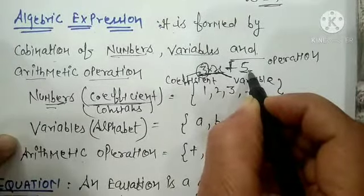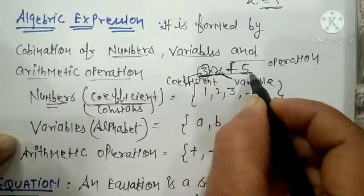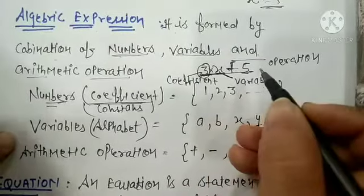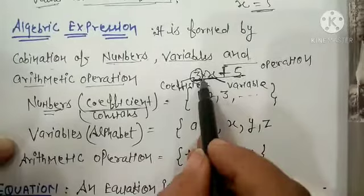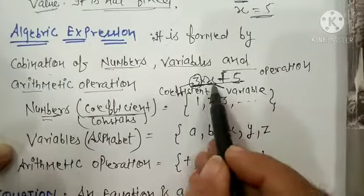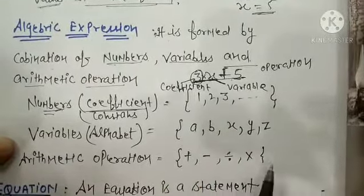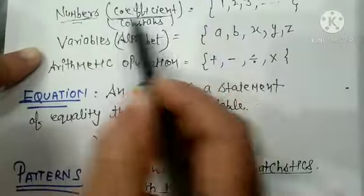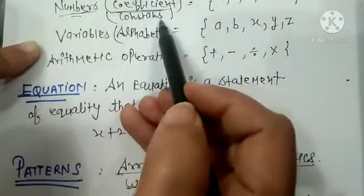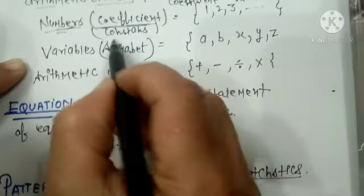So what makes up your algebraic expression? Clear. An algebraic expression is the combination of numbers, variables, and operational signs. We use numbers as a coefficient or as a constant.